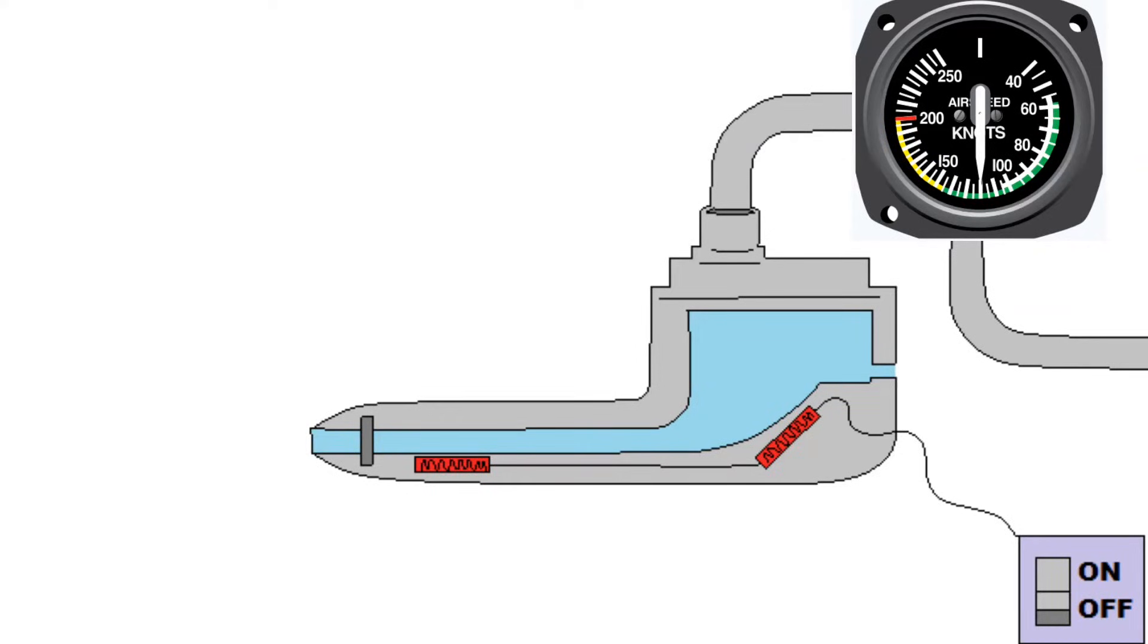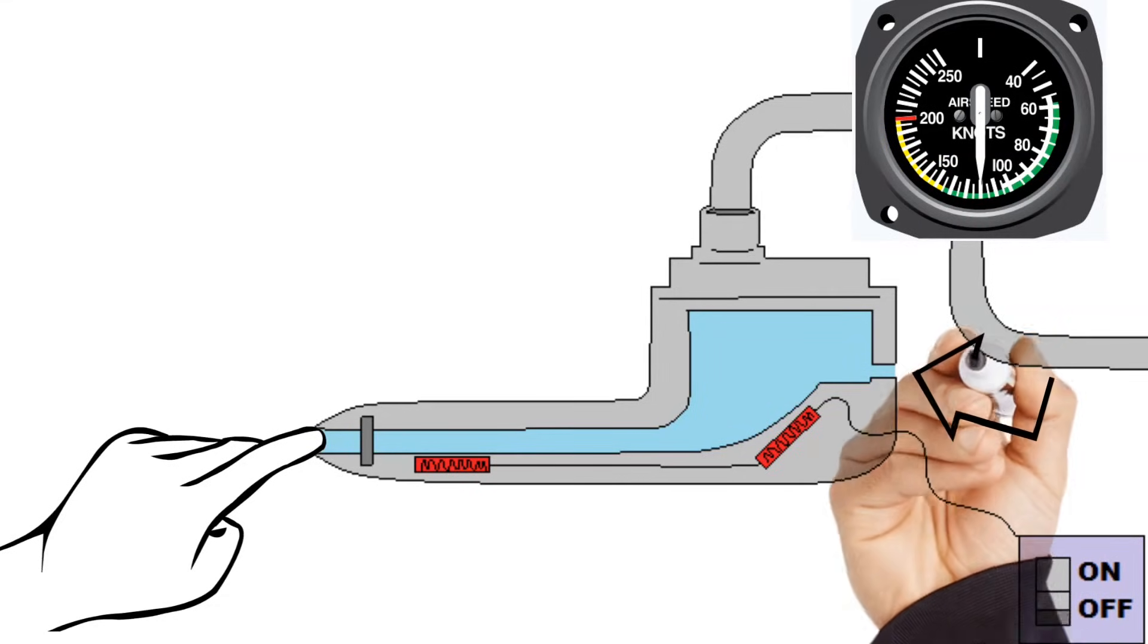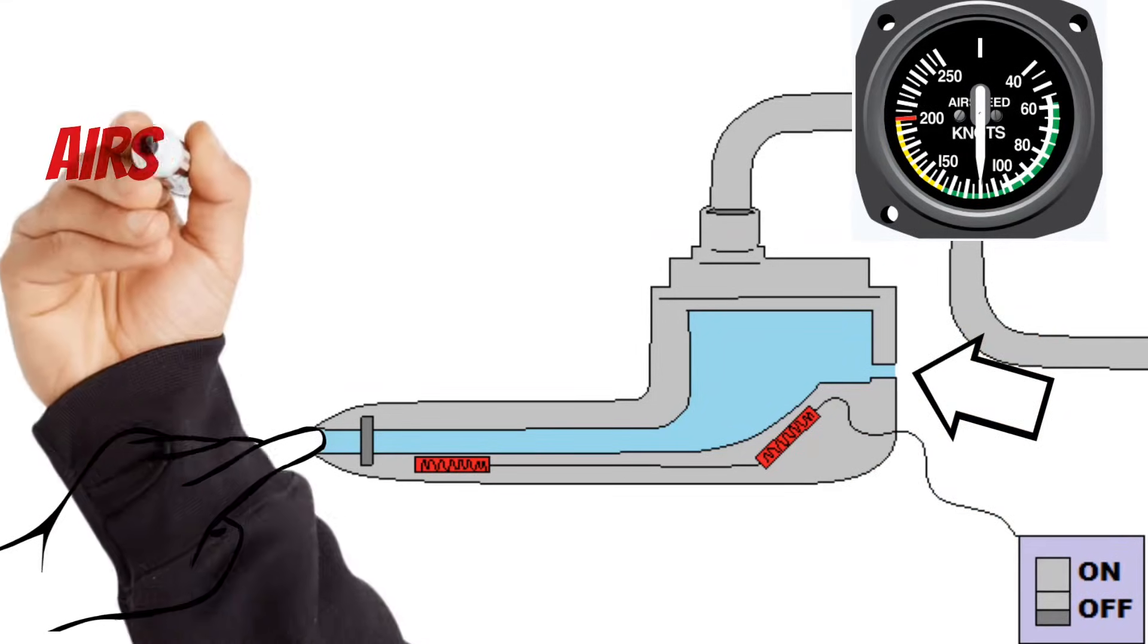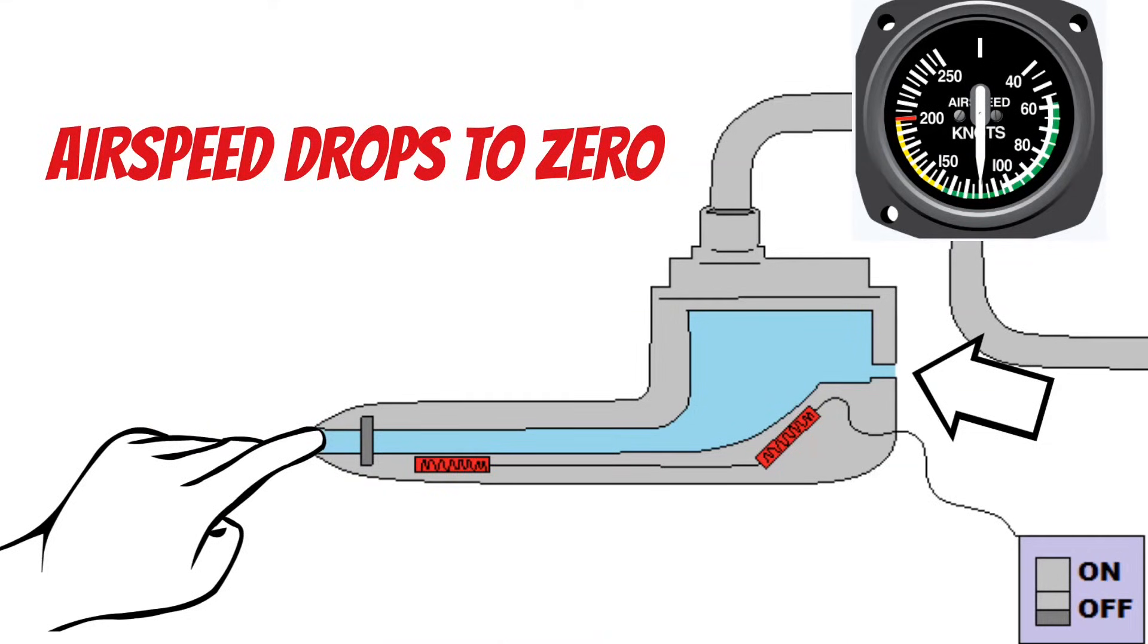For the airspeed indicator, three possible problems could happen. The first would be if the hole in the front of the pitot tube for the ram air got clogged. As long as your drain hole doesn't get clogged, what'll happen is your airspeed will drop to zero. And that's because the pitot tube is no longer taking in ram air. But the static port and the drain hole are still both taking in static air which allow them to offset each other.